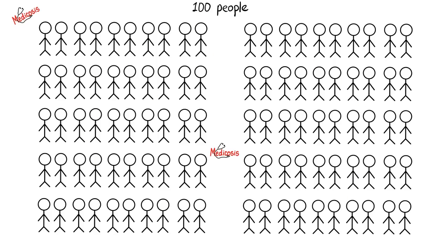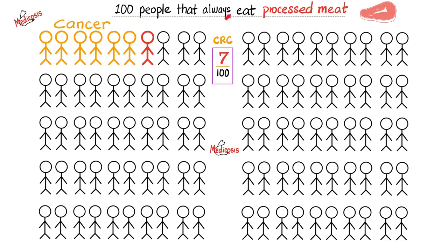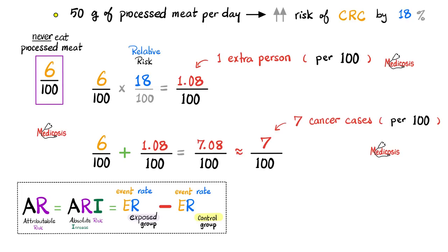Suppose we have 100 individuals. Out of 100 people who never eat processed meat, 6 out of 100 got colorectal cancer. But out of 100 people who regularly eat processed meat, 7 developed colorectal cancer. If you multiply the 6 out of 100 by 18%, you get 1 in 100 — the one extra person who developed colorectal cancer attributable to processed meat. Add that one extra person per 100 to the 6 per 100 and you get 7 per 100.